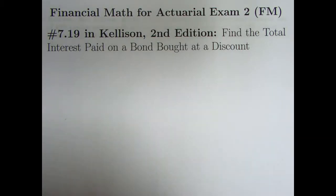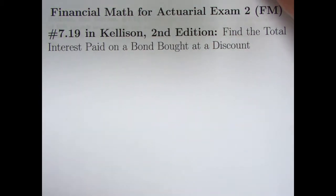Welcome to Financial Math for Actuarial Exam 2. We're going to look at problem 7.19 from Kellison's book. We'll be finding the total interest paid on a bond bought at a discount. The last four videos, 107 through 110, we've looked at some examples of bonds bought at discounts and premiums and thought about the amortization table. Some of the ideas from those videos are going to come up in this video.